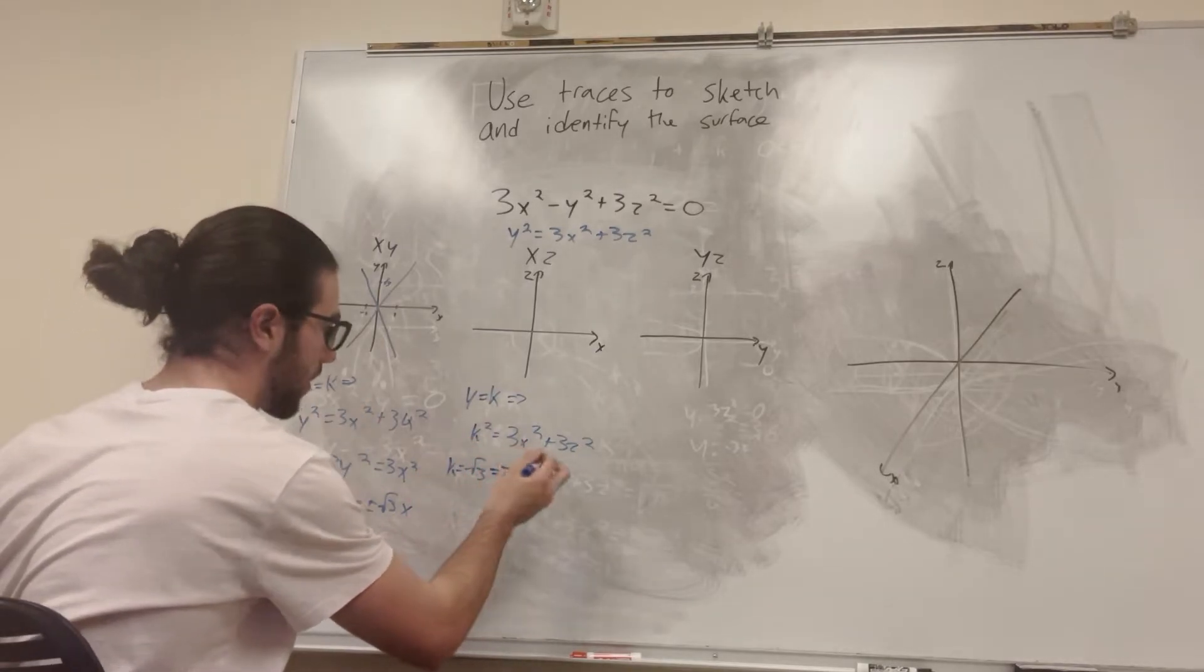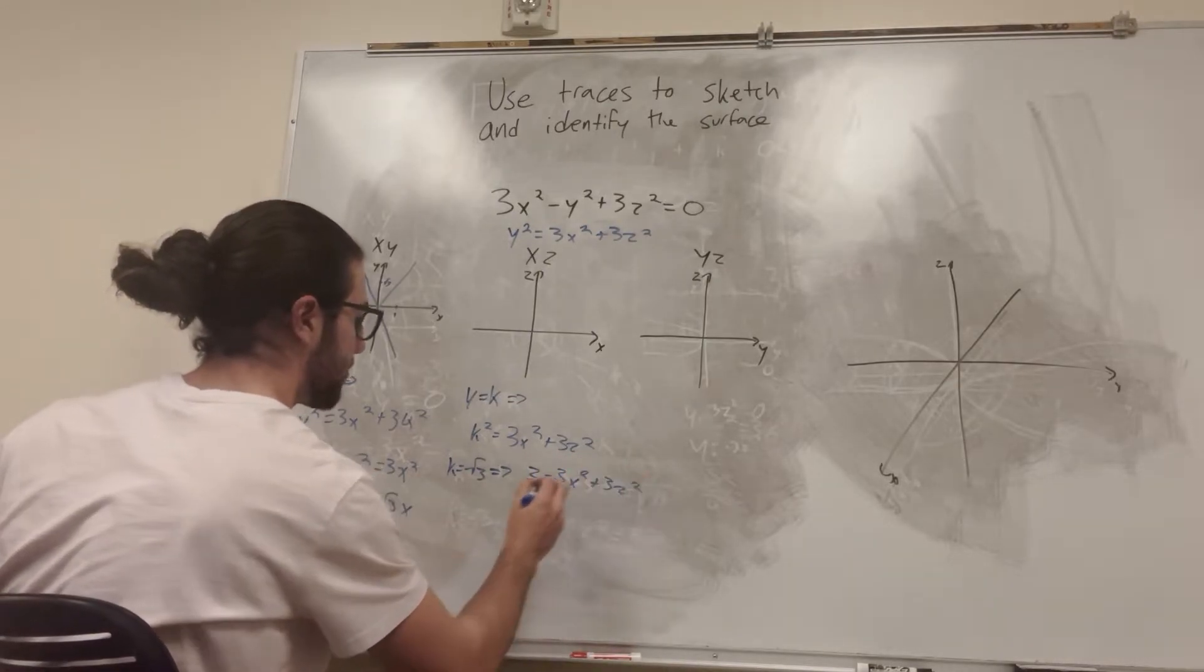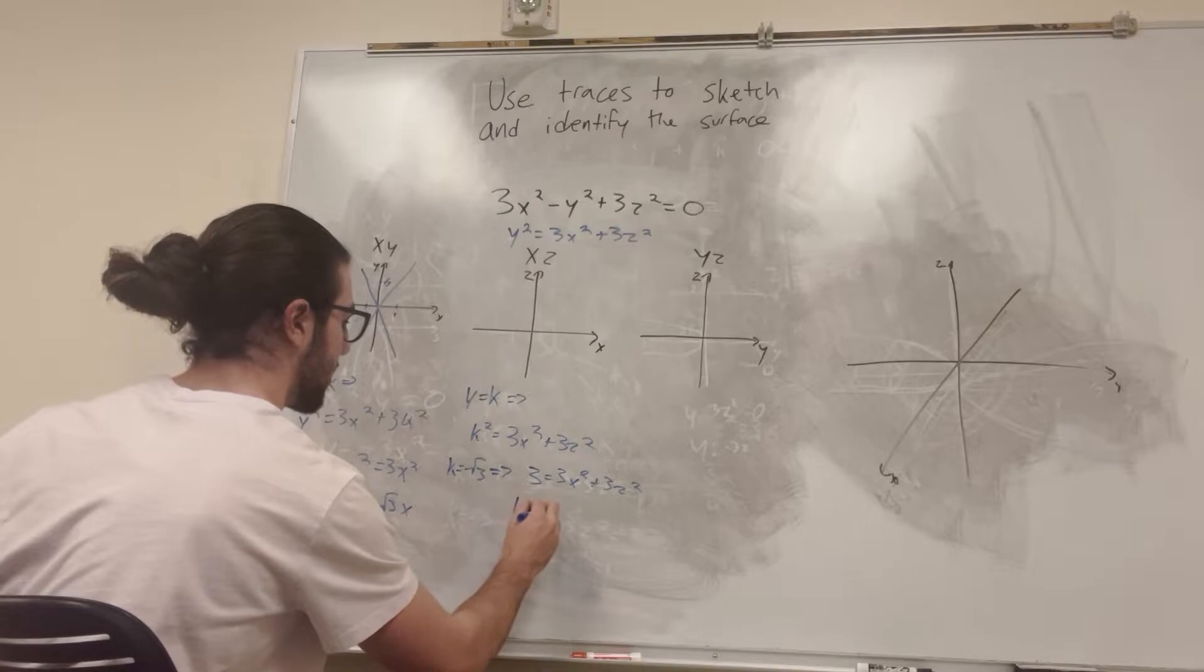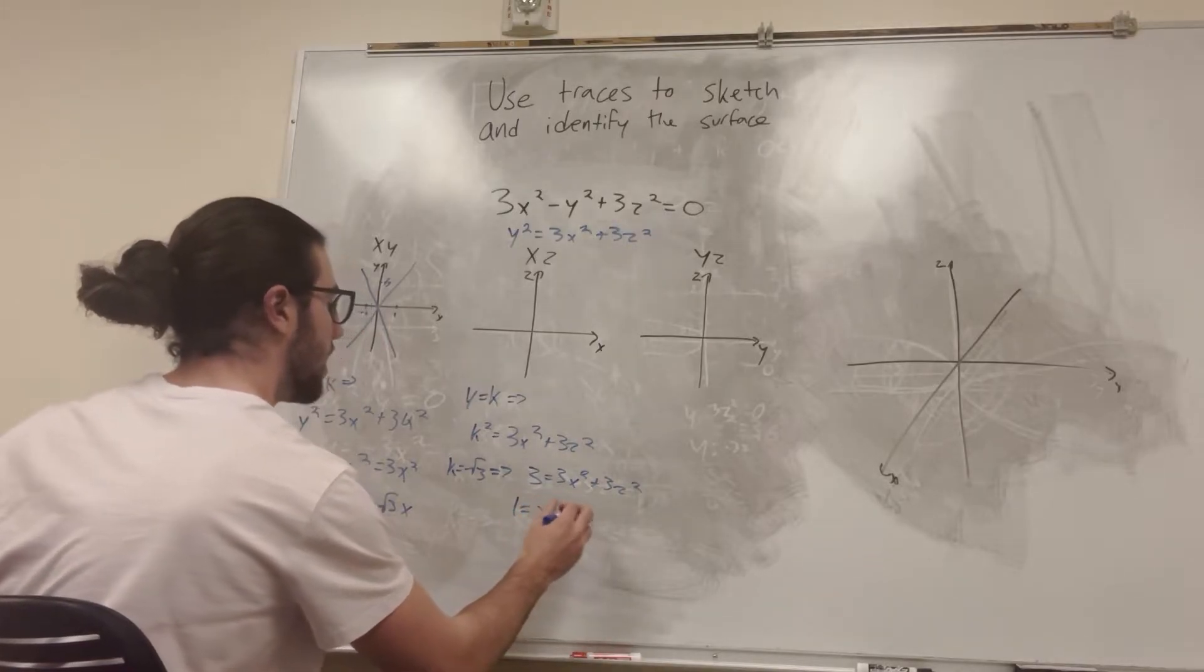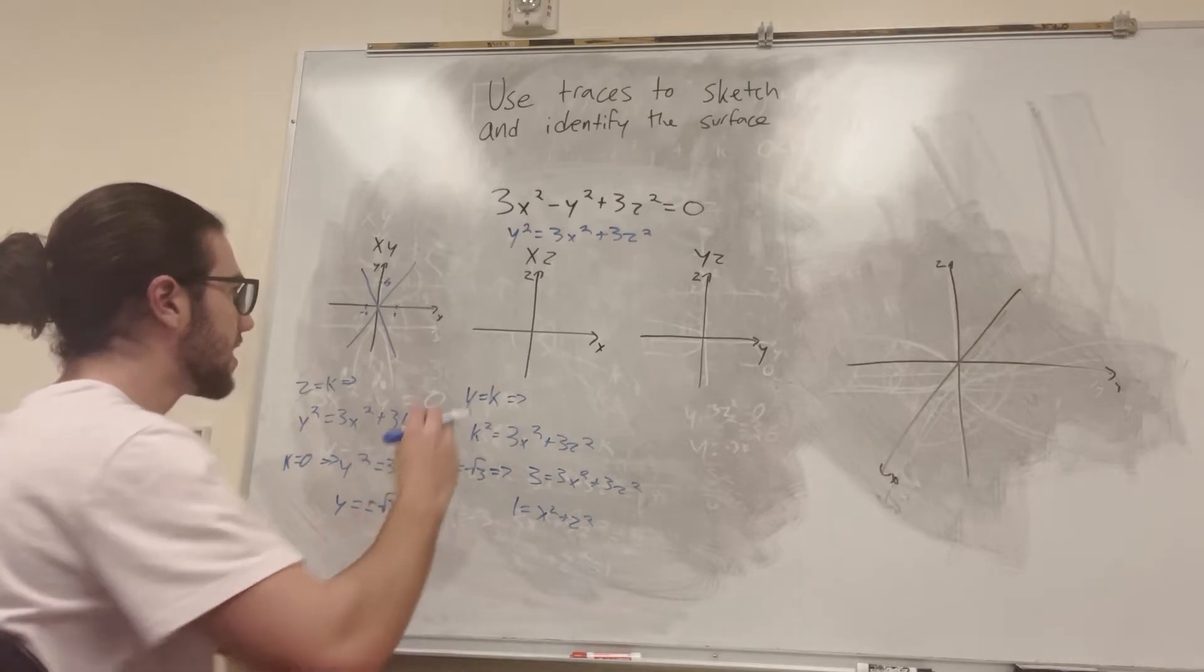So therefore, we have that square root of 3 squared is equal to 3x squared plus 3z squared. Divided by 3 on both sides, we get 1 is equal to x squared plus z squared. This is the equation of a sphere or a circle with radius 1.